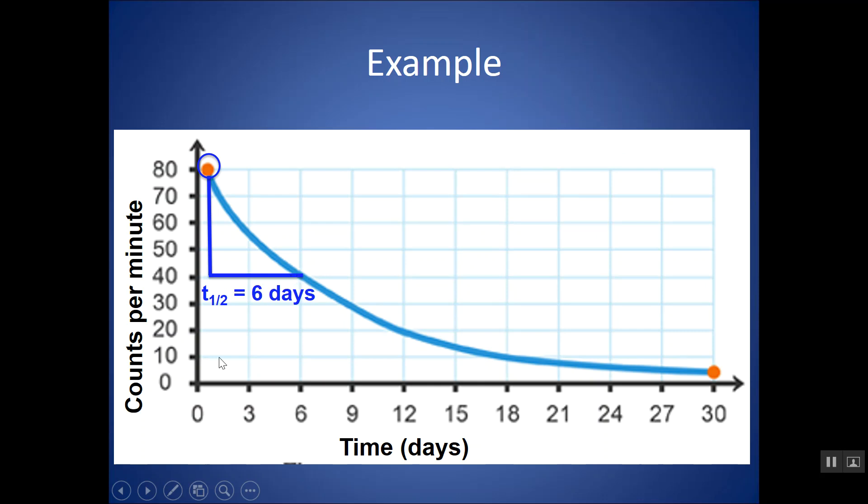You can pick any point on the graph to start with. So let's say I started with 40, go down to half of it, which would be 20, and go back until I touch the graph again. Again, the length of this horizontal line is my half-life. In this case I'm going from 6 to 12 days, so again that's a half-life of 6 days.